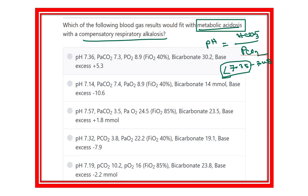We need to find pH values less than 7.35. Looking at the options: 7.36 is above 7.35 so it is removed; 7.14 may be an answer; 7.57 is more than 7.35 so it is discarded; 7.32 and 7.19 remain. The answer is located within these three options: 7.14, 7.32, and 7.19.